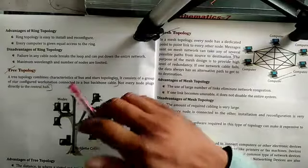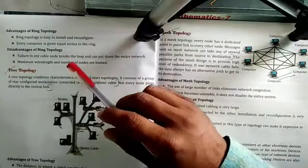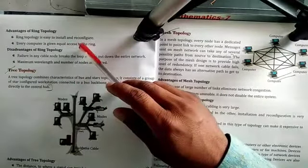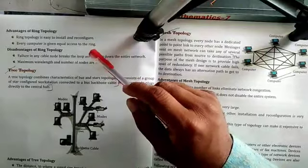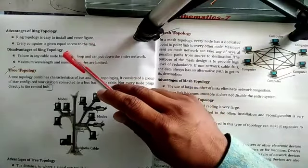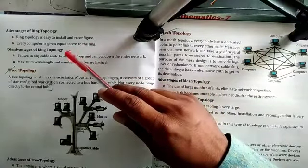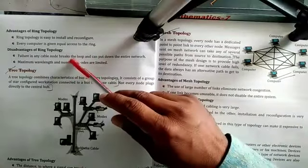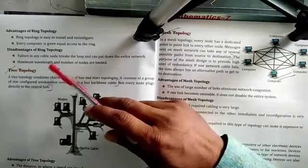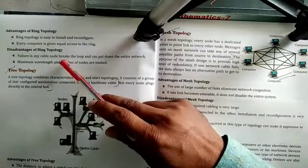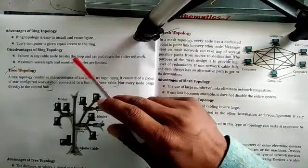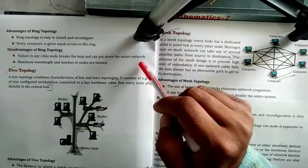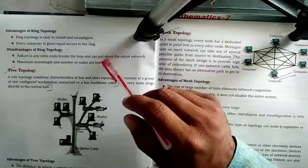Some advantages of ring topology: it is easy to install and reconfigure, and every computer is given equal access to the ring. A disadvantage is that failure in any cable or node breaks the loop and can bring down the entire network — if any system fails, the entire network fails.